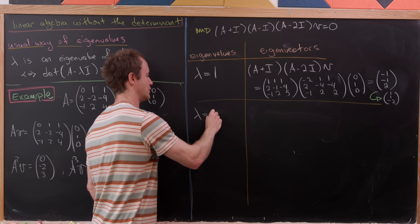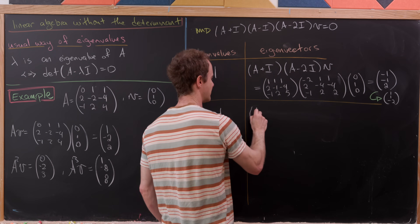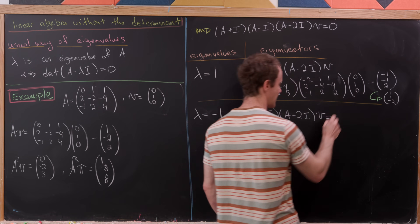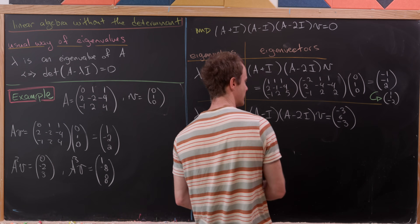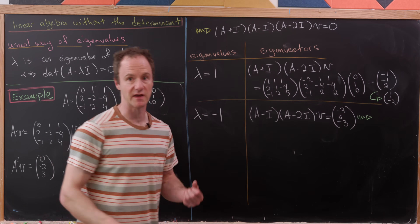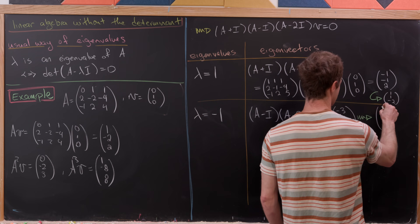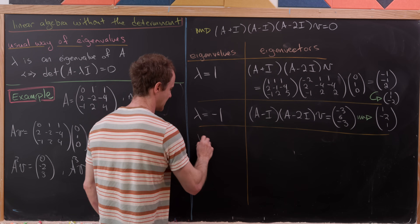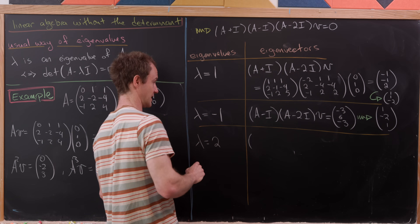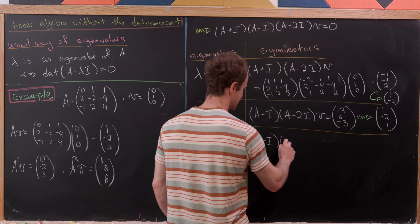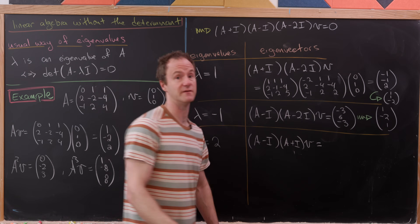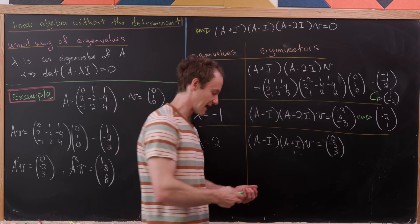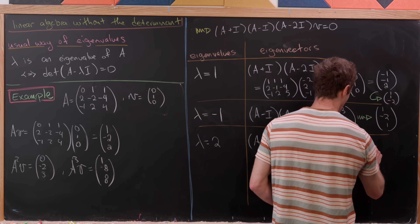For eigenvalue λ = −1, the eigenvector is (A − I)(A − 2I)·V. Computing that gives (−3, 6, −3). Since everything is divisible by 3, we scale to get eigenvector (1, −2, 1). Finally, for eigenvalue λ = 2, the eigenvector is (A − I)(A + I)·V, which gives (0, −3, 3). Scaling, we take eigenvector (0, 1, −1).